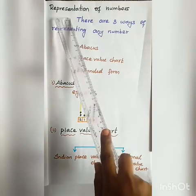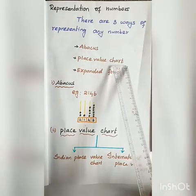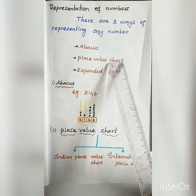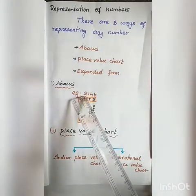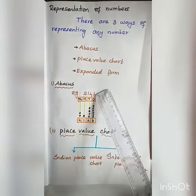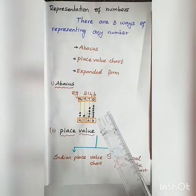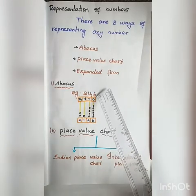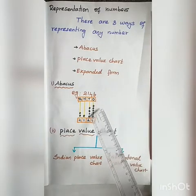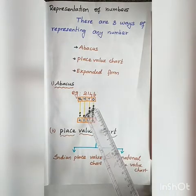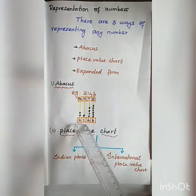Next topic: Representation of Numbers. There are 3 ways of representing any number. First: Abacus. Second: place value chart. Third: expanded form. You are already familiar with the Abacus. For example, 2,146: 6 is in the 1's place, 4 in the 10's place, 1 in the 100's place, and 2 in the 1000's place. You put beads according to each digit's place value, giving you 2,146.